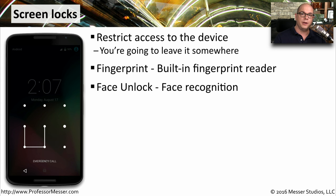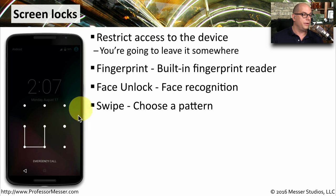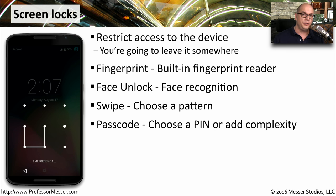Your mobile device might also include face recognition. That way, when your face is near the device, it knows that it's you and can unlock the device normally. You might also use a swipe feature, where there's a predefined pattern that you follow on the front of your phone, and by following this pattern you can unlock the phone. A passcode is a traditional way to lock your mobile device — you can either use a personal identification number or a more complex password.